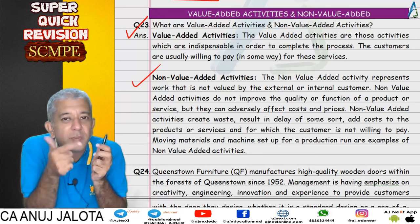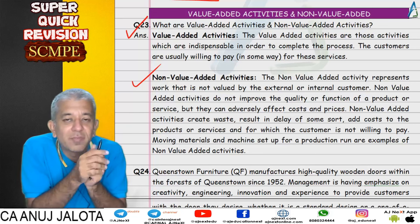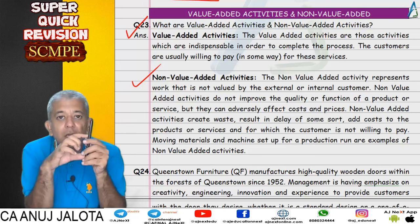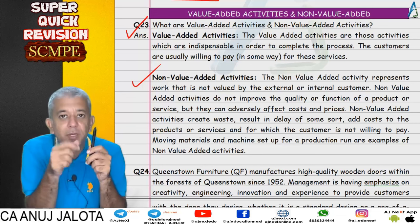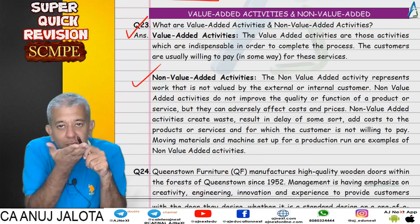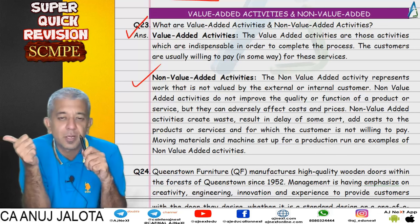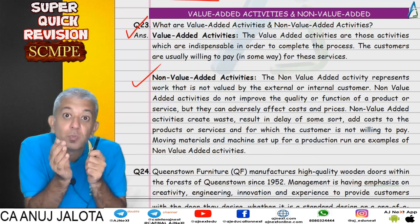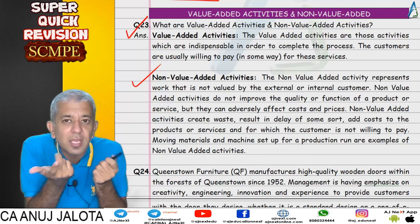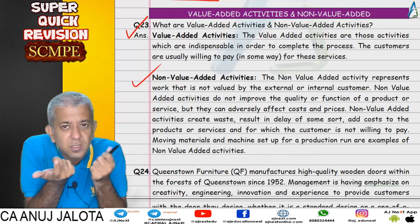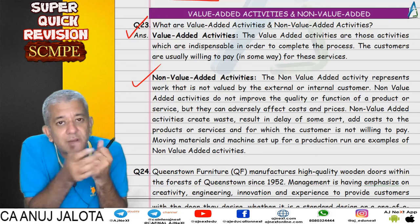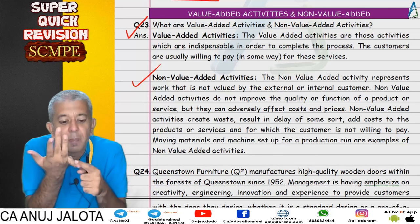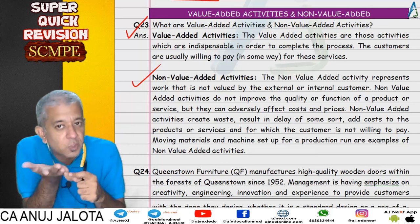Non-value-added activities are those which do not add value to the product. For example, before the pen is made, we set up the machines — the customer is not concerned with that; that is non-value-added. Another example: if one part of the pen is made in one machine and another part in a second machine, and the part is manually carried between machines, that moving time is non-value-added. The customer is not concerned with setup time or move time — both are non-value-added.